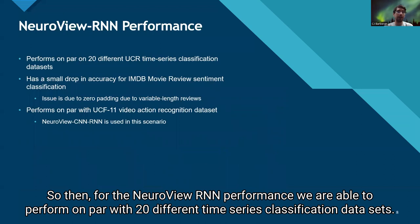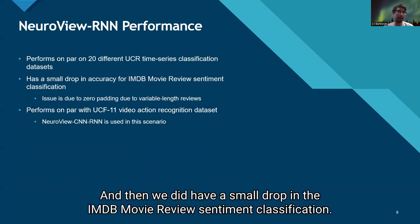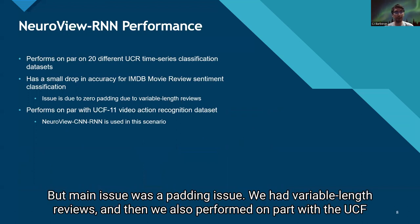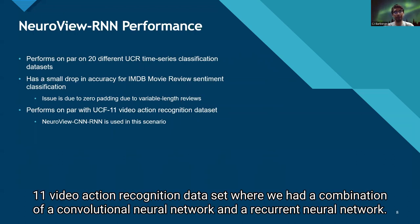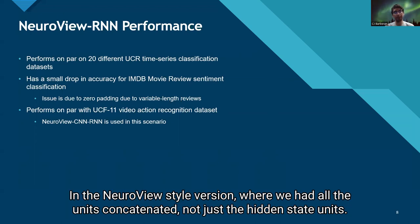For NeuroView RNN performance, we are able to perform on par with 20 different time series classification datasets. We did have a small drop on the IMDB movie review sentiment classification — the main issue was zero padding with variable-length reviews. We also performed on par with the UCF-11 video action recognition dataset, using a combination of a convolutional neural network and a recurrent neural network in NeuroView style, with all units concatenated, not just the hidden state units.